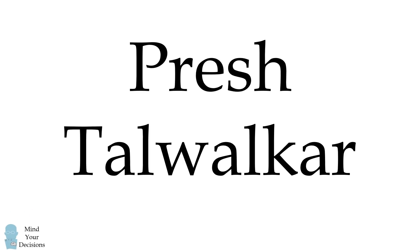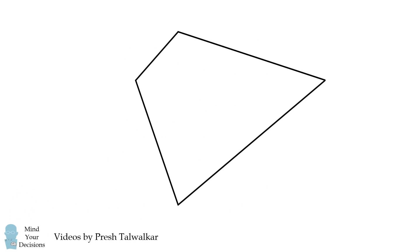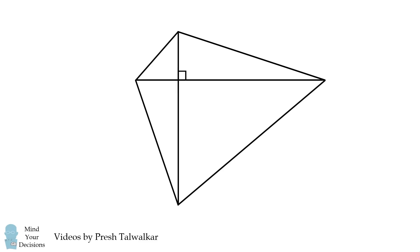Mind your decisions. I'm Presh Talwalkar. A convex quadrilateral has diagonals that are perpendicular to each other. If three consecutive sides have lengths of 3, 2, and 1, what is the length of the fourth side?